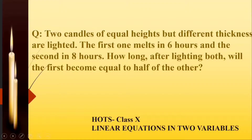Hello everyone. We're doing an important HOTS question from the chapter of Linear Equations in Two Variables for class 10. It states that two candles of equal heights but different thickness are lighted. The first one melts in six hours and the second in eight hours. How long after lighting both will the first become equal to half of the other?